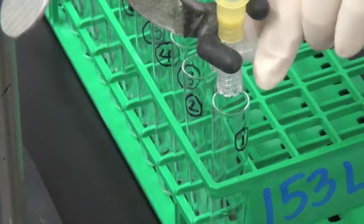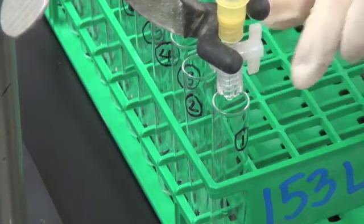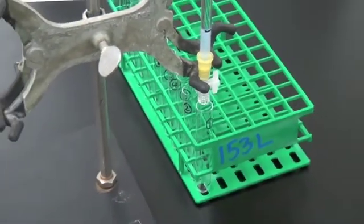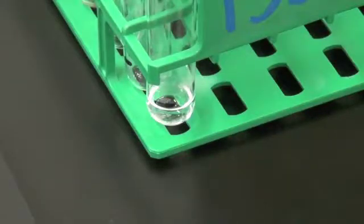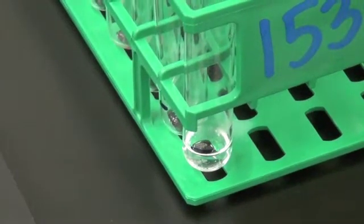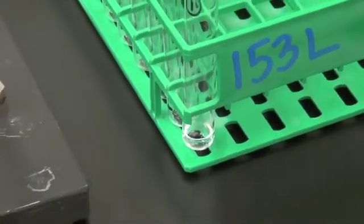Next, after adding the load sample to the column, you want to then start collecting your fractions. The ideal drop rate is about one drop for every 10 seconds. Once you have collected your first two milliliter fraction, which contains a portion of your buffer and a portion of the load, you should then move the rack forward to the next collection.